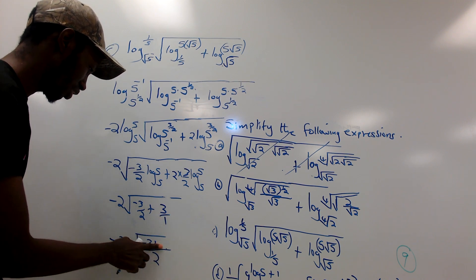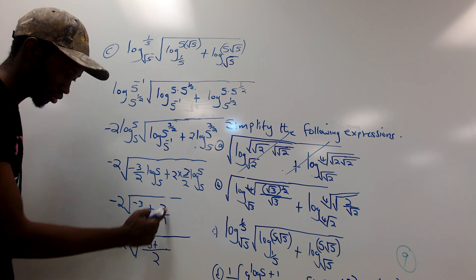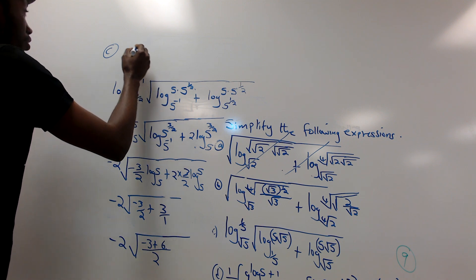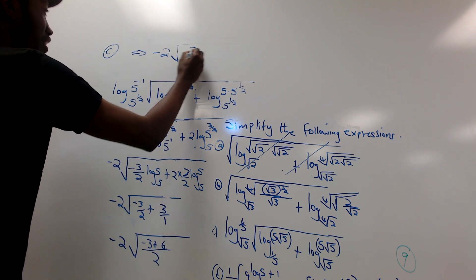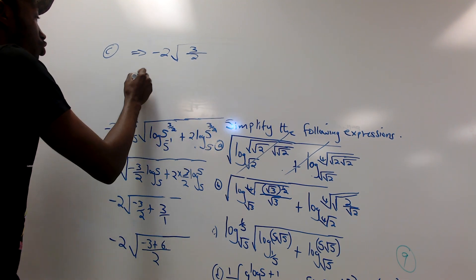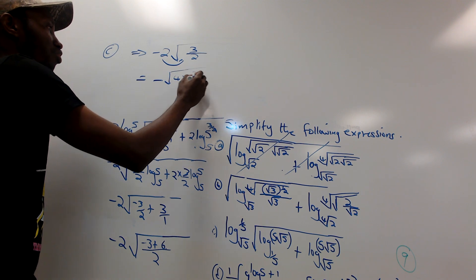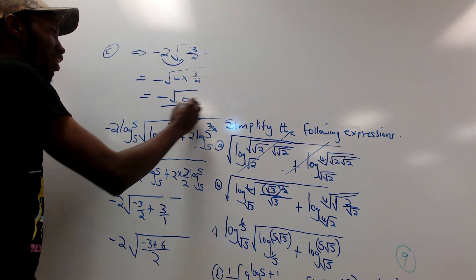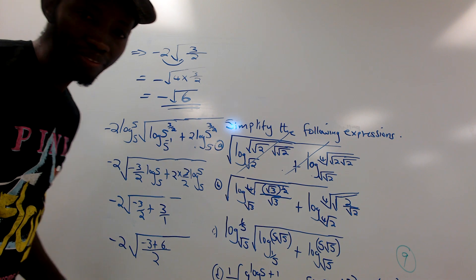Final simplification for C: −2 times root of (−3/2 + 3/2) ... combining with the correct base, we get −2 × root(3/2). Taking the 2 inside the square root: √(4 × 3/2) = √6. So the final answer for part C is negative square root of 6, i.e., −√6.